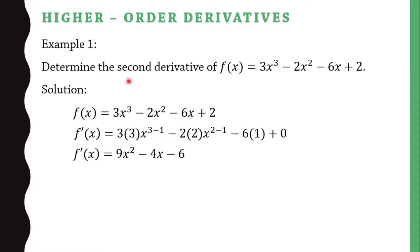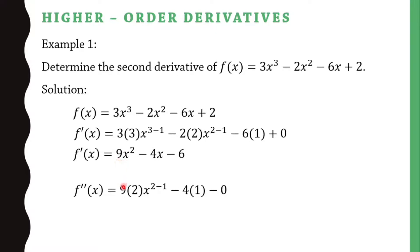Remember, we're looking for the second derivative of the function, so we need to continue. To get the second derivative, we take the derivative of the first derivative: derivative of 9x² − 4x − 6. That's 9 times 2 is 18, x raised to 2−1 is x; minus 4 times 1 is 4; minus derivative of 6 is 0. So the second derivative is 18x − 4.